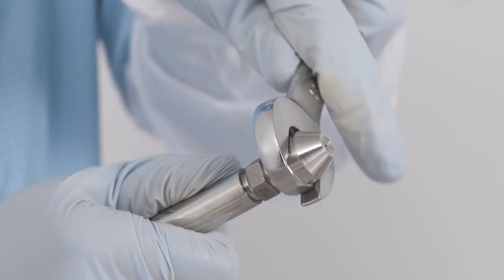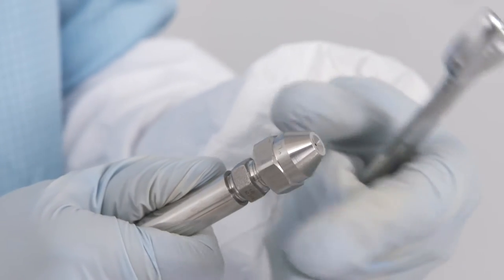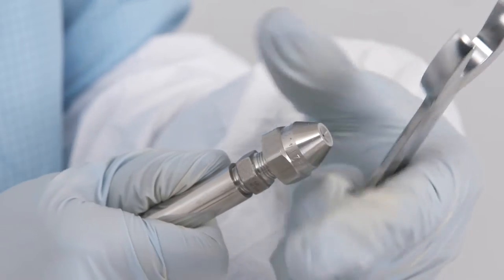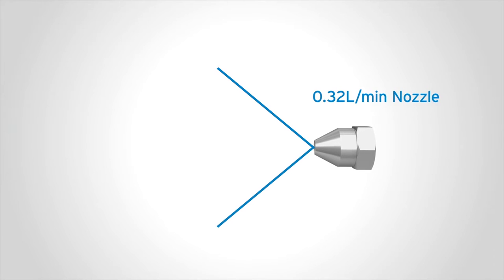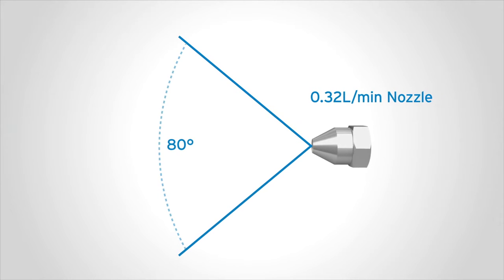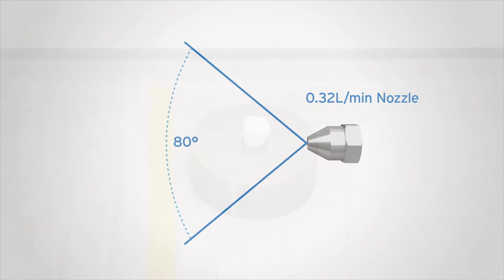Versatility is assured as the nozzles of the Clear Side Pressurized Spray System can be easily changed as needed to vary both the controlled rate of flow and spray patterns. Large flat surface areas, for example, are best covered using the 0.32 liter per minute nozzle, which has an 80-degree angle of spray cone.